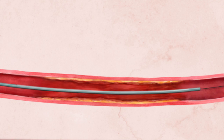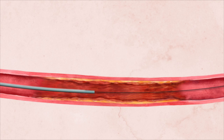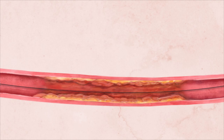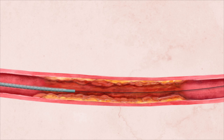The doctor collapses the balloon and removes it completely. Sometimes, if the artery remains partially blocked, a stent, or metal scaffold, is used to keep the artery open. In its collapsed form, the stent is loaded onto a catheter that is then inserted over the wire to the site of the artery blockage.